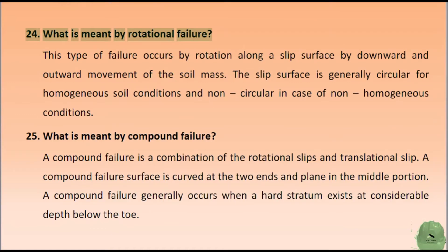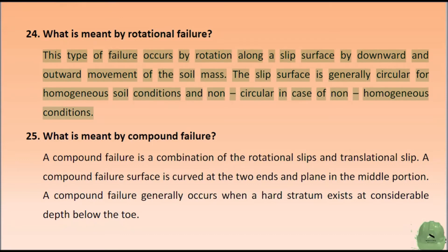What is meant by rotational failure? This type of failure occurs by rotation along a slip surface by downward and outward movement of the soil mass. The slip surface is generally circular for homogeneous soil conditions and non-circular in case of non-homogeneous conditions.